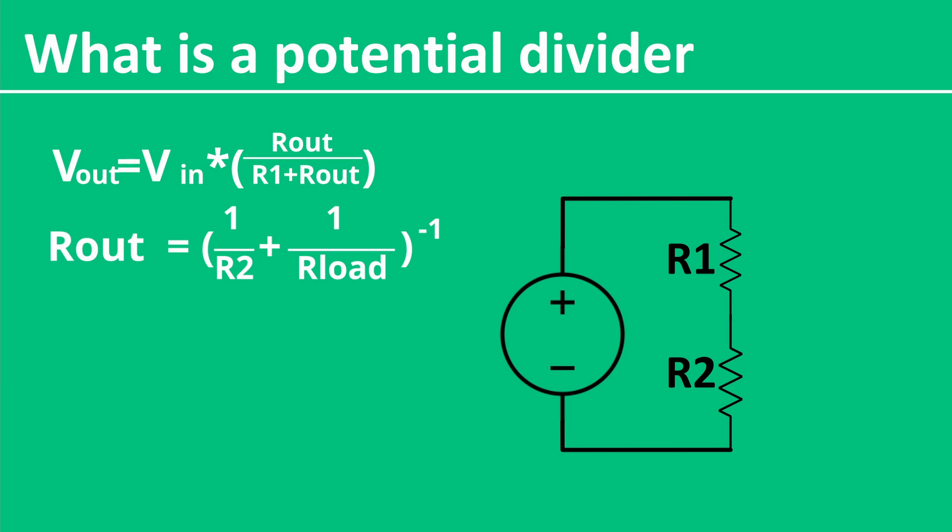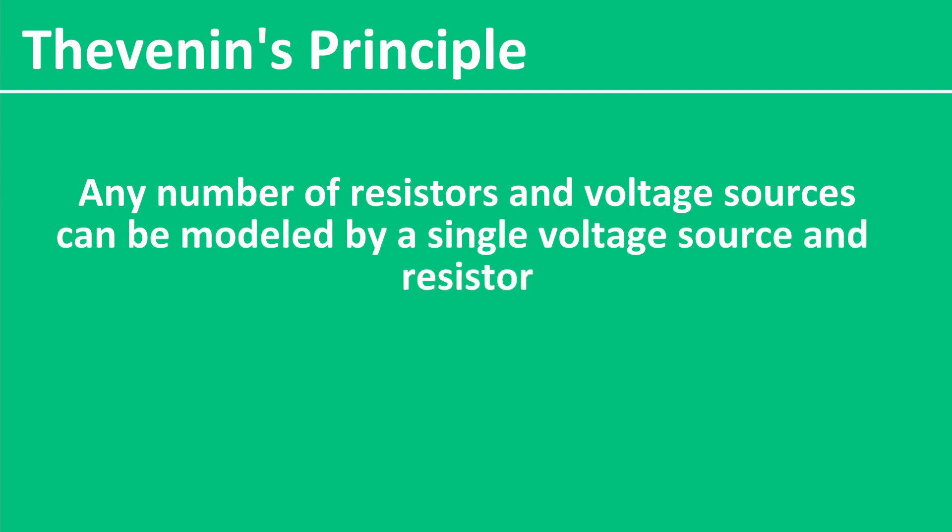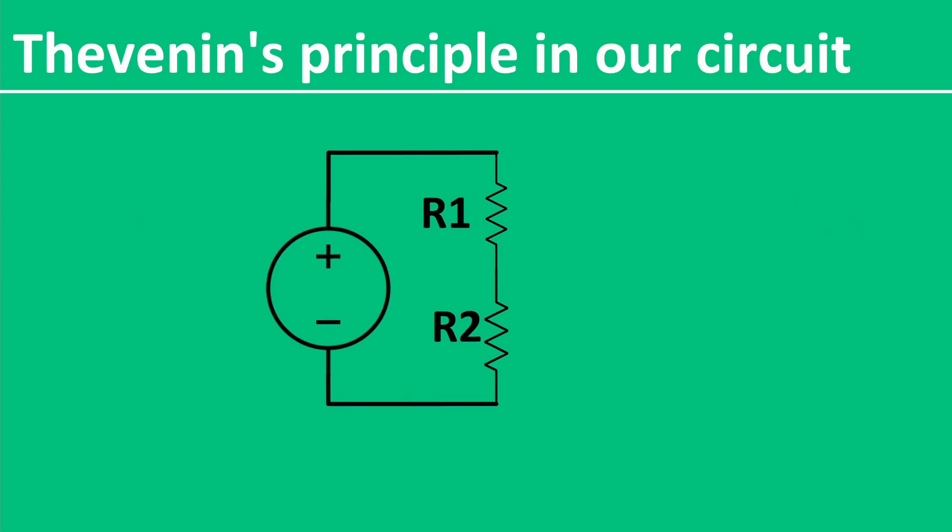We can actually simplify this further by using Thevenin's principle of equivalence, which states that any number of resistors and voltage sources can be modeled by a single ideal voltage source and a resistor. This means that our complex circuit here can actually be modeled by a single resistor and an ideal voltage source. You're beginning to see now that this actually looks a hell of a lot like a real-world voltage source. And that would be because it is.